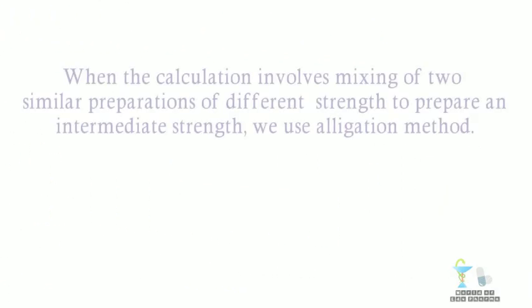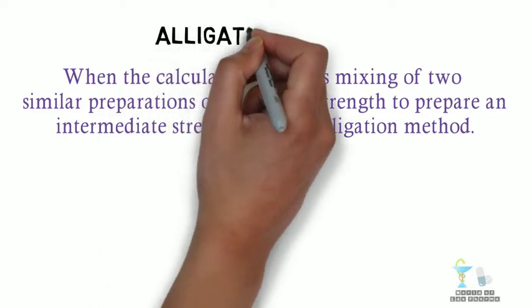When the calculation involves mixing of two similar preparations of different strength to prepare an intermediate strength, we use alligation method.